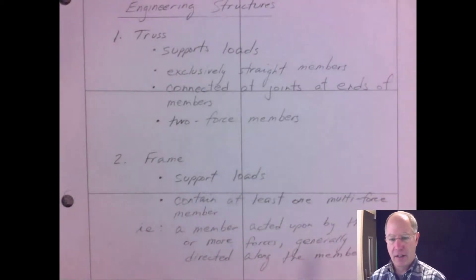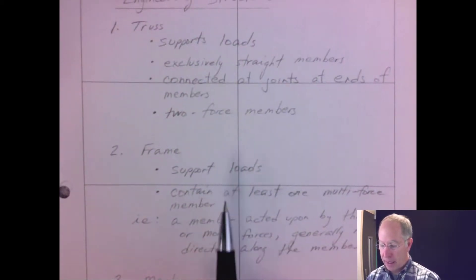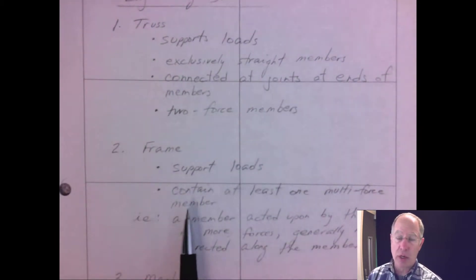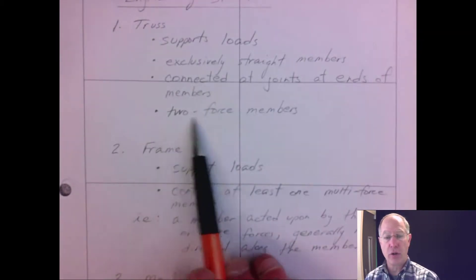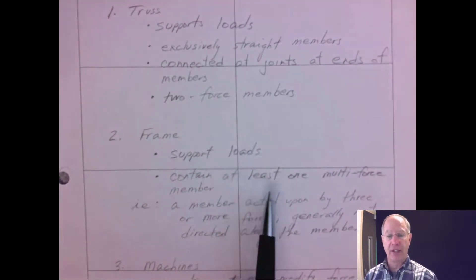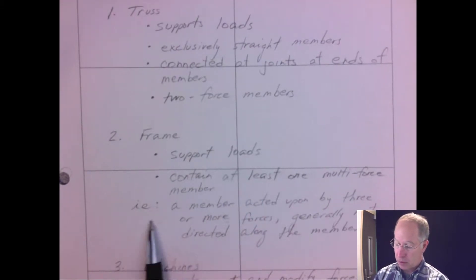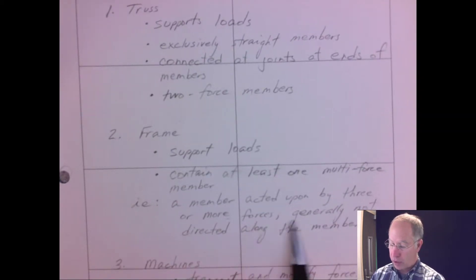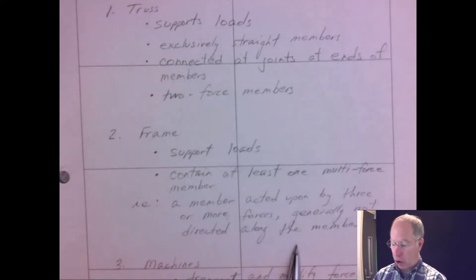So a frame also supports loads. Now differing from the truss, a frame contains at least one multi-force member, whereas the trusses were two-force members exclusively. A frame can have a third member acting on it, or a fourth or fifth—at least one multi-force member.